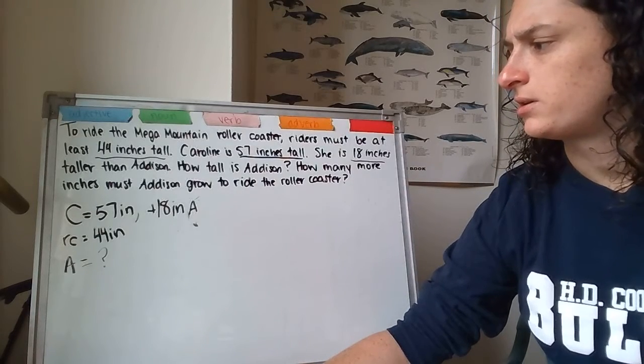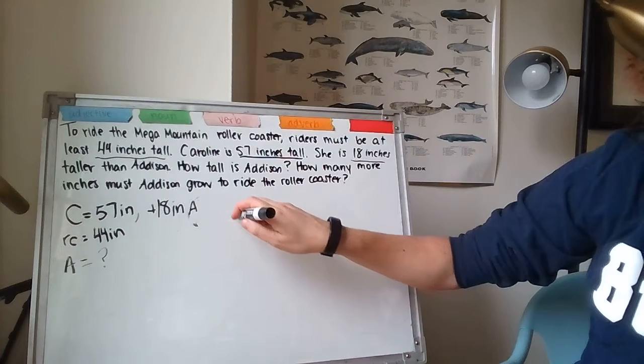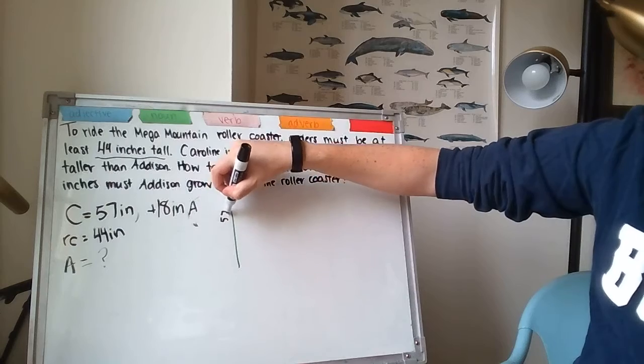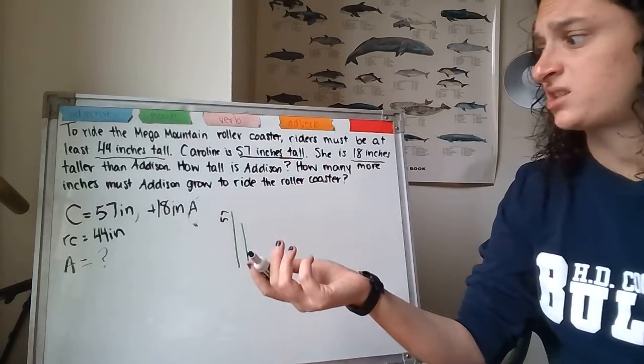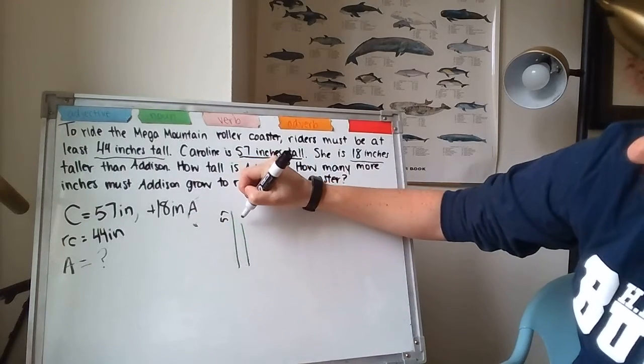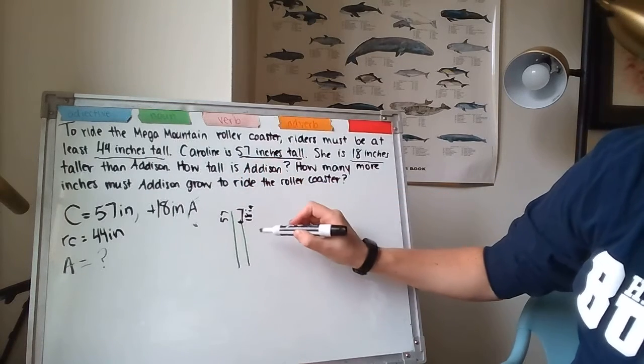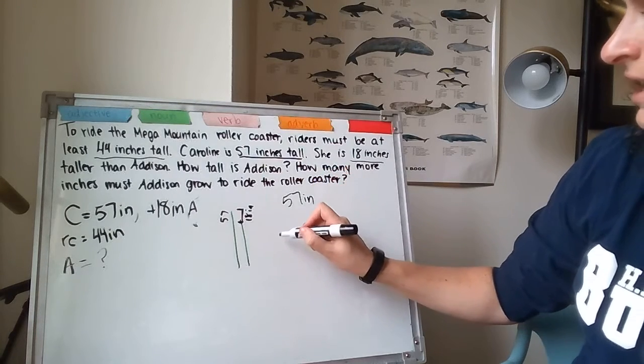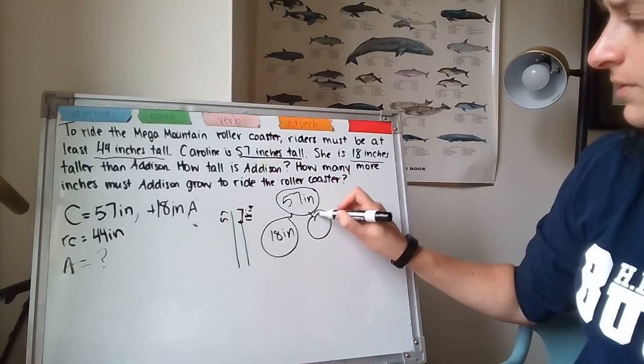So, Addison, if Caroline is taller than Addison, Caroline is 57 inches tall. That means Addison is shorter than Caroline. So, my line here is shorter. I don't know what it is. I just know that it's shorter. Now, I do know that Caroline is 18 inches taller than Addison, which means this part is 18 inches. So, that means that I have my total is 57 inches. I have one part is 18 inches. So, I must be looking for the other part.